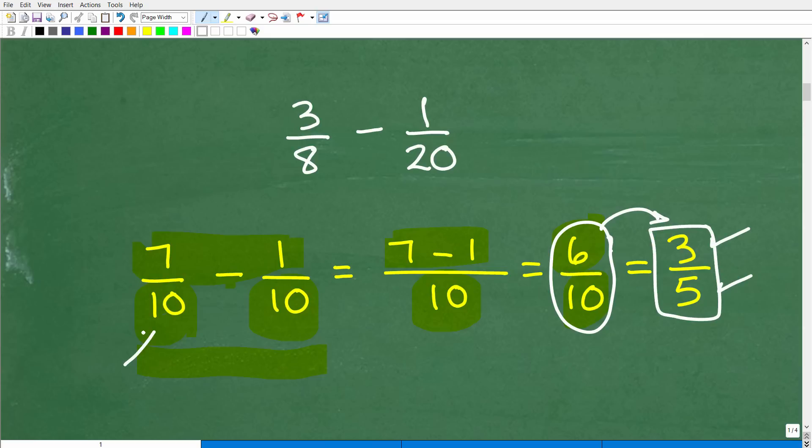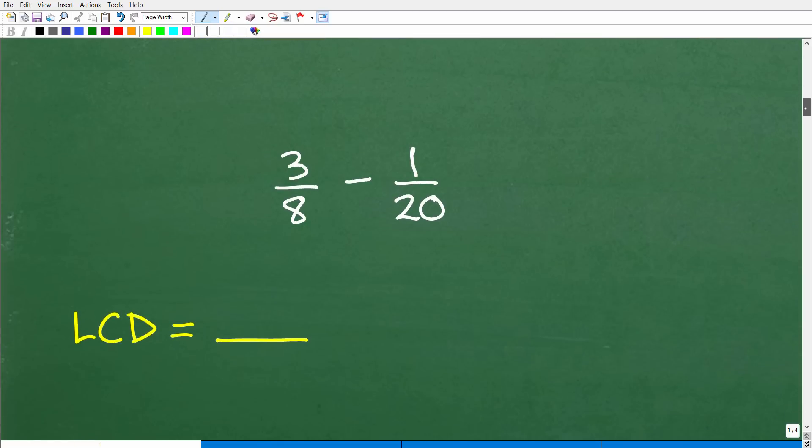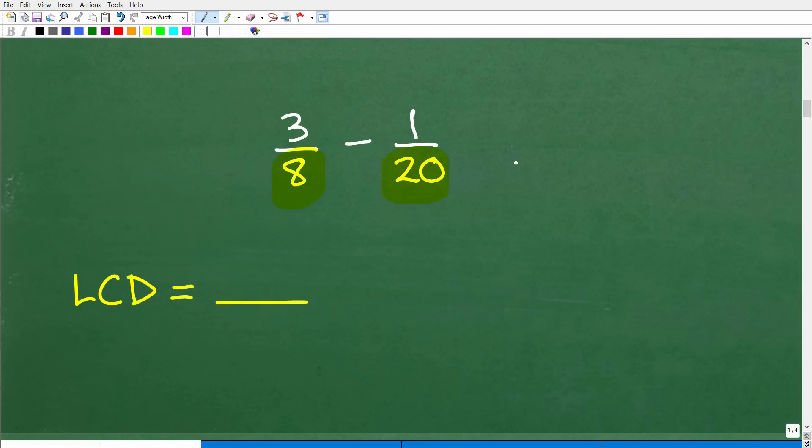But the point of me doing this basic example is that we start off, when we look at subtracting fractions or adding fractions, we have to have the same denominator in order to do this. So in this particular situation, we have a problem, right? We're like, well, this number is not the same as this number, so what do we do? Well, let's go ahead and talk about that right now. Okay, so what we need to do is we need to find a denominator, okay, a number that both 8 and 20 have in common.